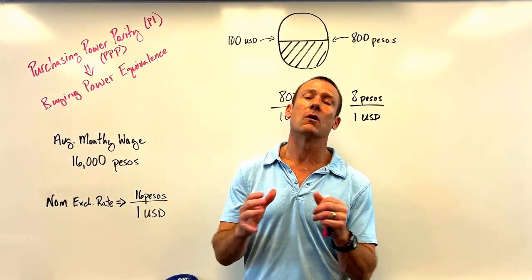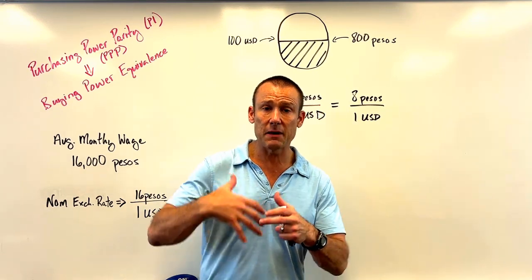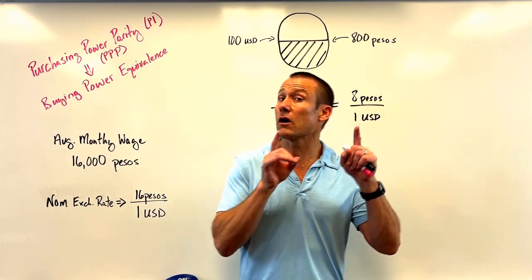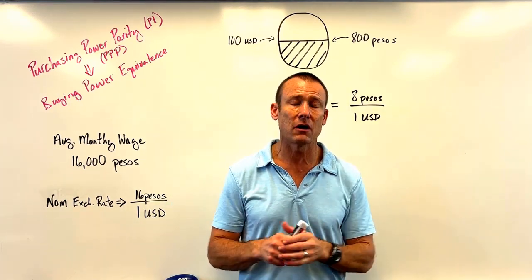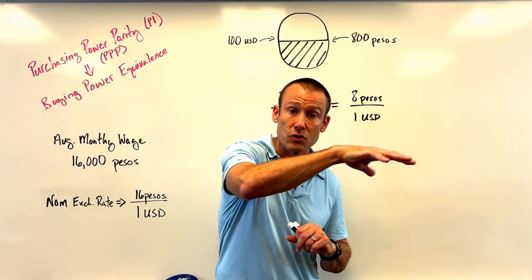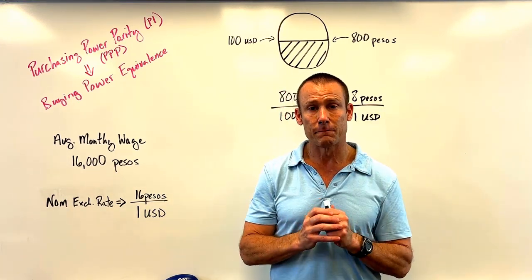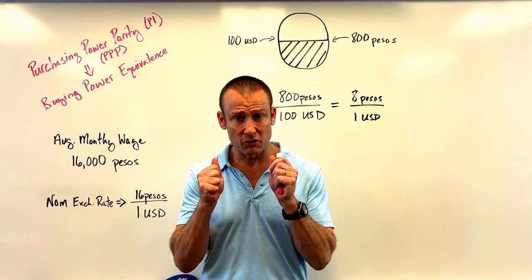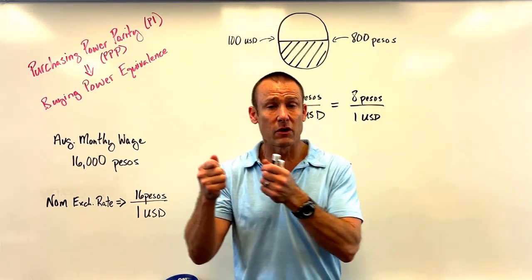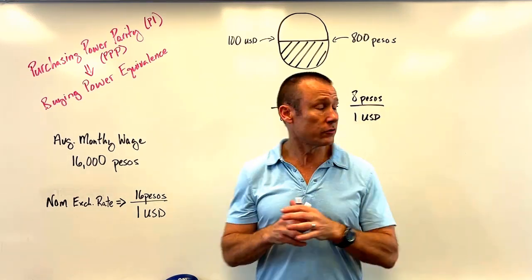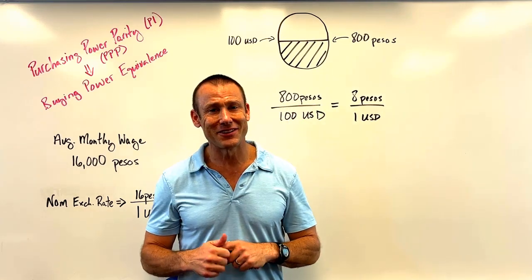If I convert 16,000 pesos using my purchasing power parity exchange rate of 8 pesos per USD, I get 2,000 dollars. So an average worker in Mexico making 16,000 pesos is able to buy the goods and services that a worker in the United States would need 2,000 dollars — not 1,000 — to buy. Many economists, when trying to figure out purchasing power parity to compare standards of living, use the PPP exchange rate, not the nominal exchange rate.